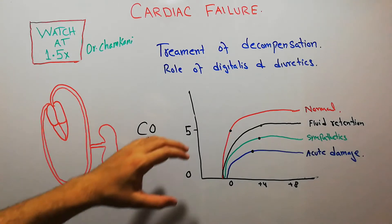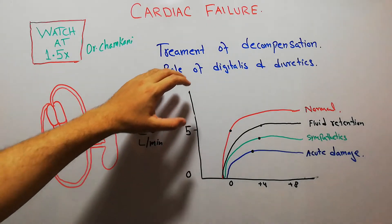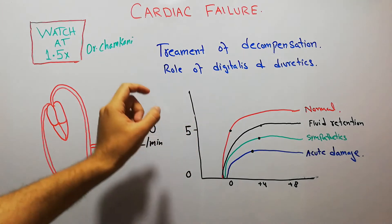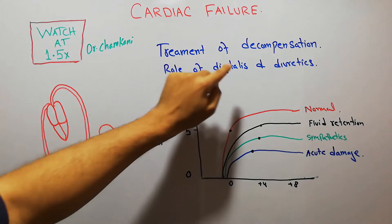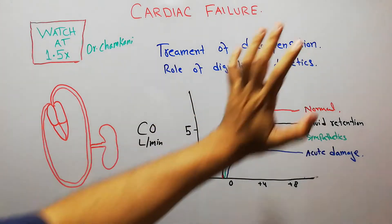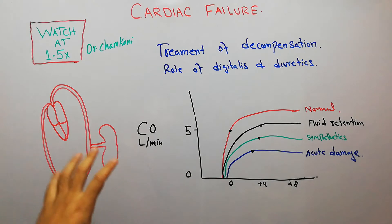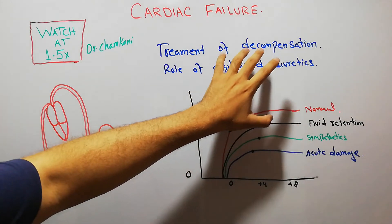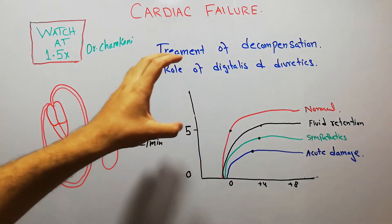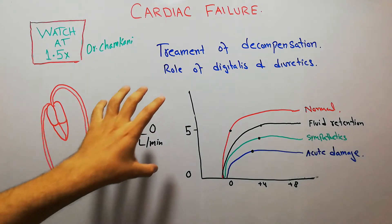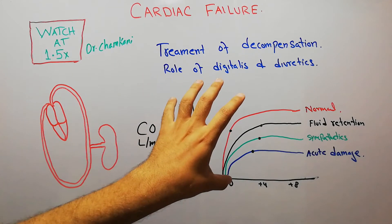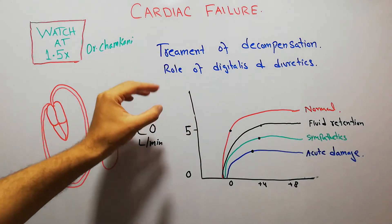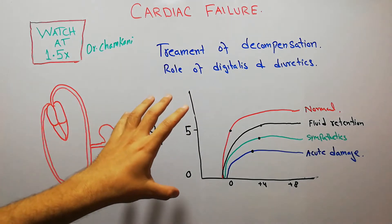Today in this lecture we are going to discuss the treatment of decompensated heart failure, and specifically we are going to discuss the role of digitalis and diuretics. To understand decompensated heart failure, I am going to summarize the acute and chronic effects of cardiac failure, then compensated heart failure and decompensated heart failure.